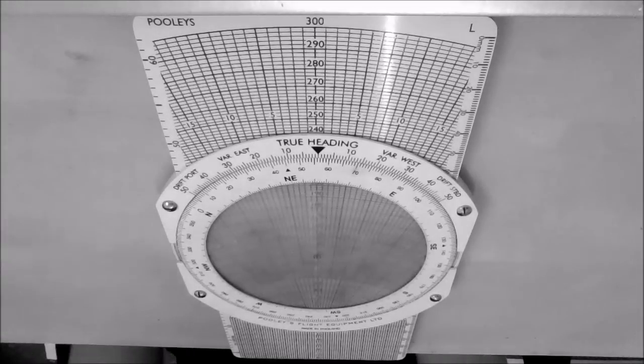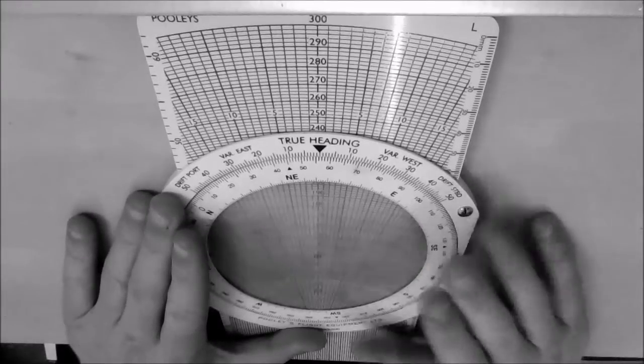OK, so here I'm going to be teaching you how to calculate your track and ground speed on your CRP5 computer, obviously on the wind side of the computer.